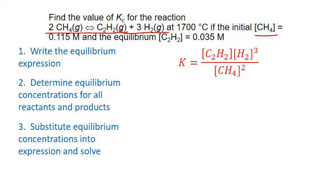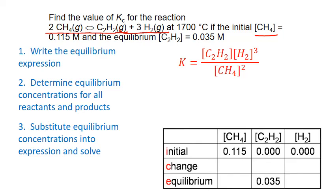We use this to write our ICE table — always initial, change, and equilibrium for the rows — with columns for the reactants and products included in the equilibrium expression: methane, ethine, and hydrogen gas. We fill it in with all the concentrations given in the problem. We have our initial row filled in, and we have the one equilibrium concentration for ethine that we were given.